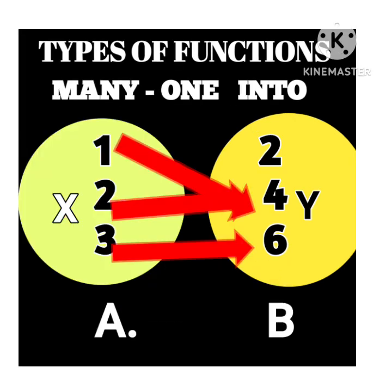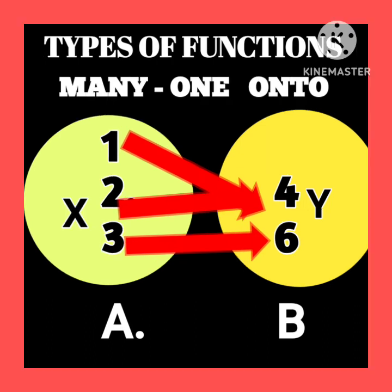This is many-one into: there are many arrows on four and one element — two — is left in B, so it is called into. That makes it a many-one into function. For many-one onto, no element is left in B and there are many arrows on four.